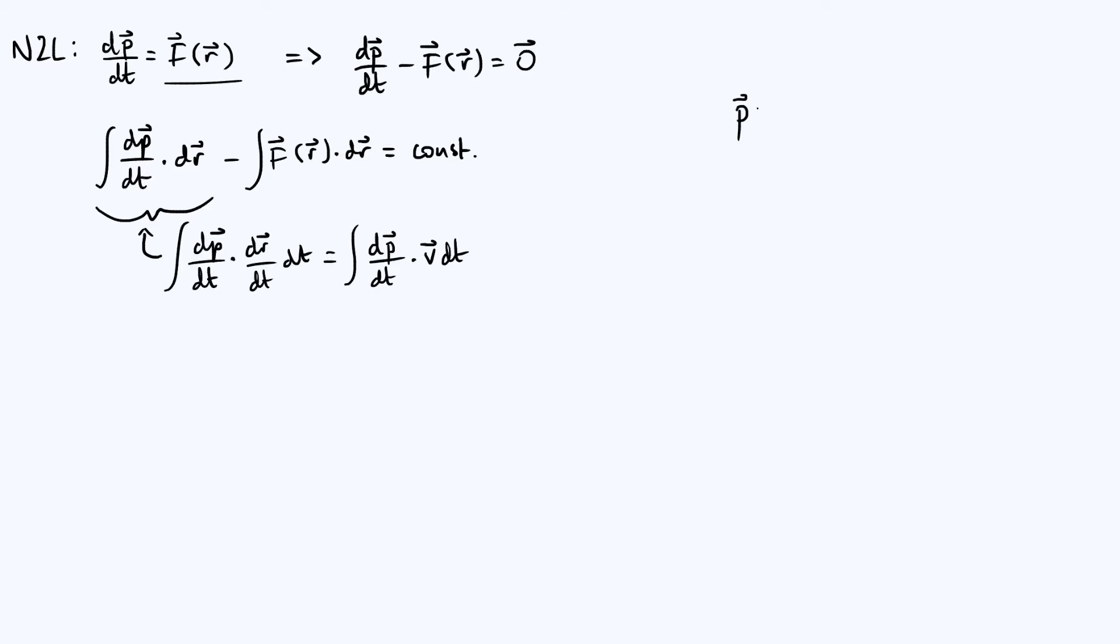Now, next step is going to be just recall the basic definition of momentum: p is just mass times velocity. And so I am going to write this v over here as momentum divided by mass.